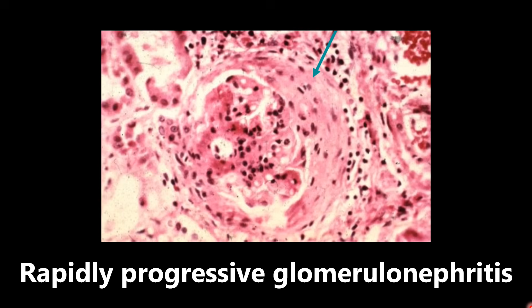This next image is another glomerulonephritis — rapidly progressive glomerulonephritis. The important thing to note is this big crescent-like structure of the glomerulus, which kind of looks like a moon. That is why it also has the name crescentic glomerulonephritis. It is important to note that this crescent is composed of fibrin and macrophages, not collagen. So if you see this moon-shaped image, think rapidly progressive glomerulonephritis, and know the crescent is fibrin and macrophages.